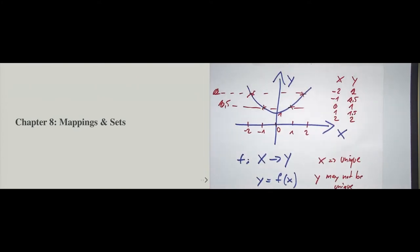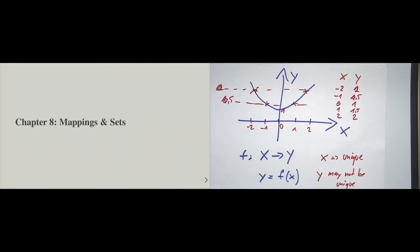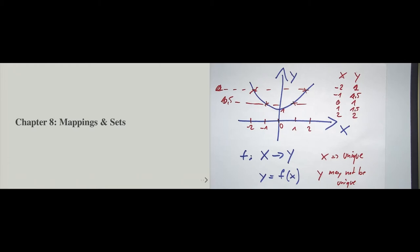This is just how functions are defined in math. There are certainly other types of mappings, but this is a mapping in the way we are taught in math, and it's exactly this what we want to mimic in a computer. So how do we do that in Python? Mainly we do that with the so-called dict type. Dict type stands for dictionary.